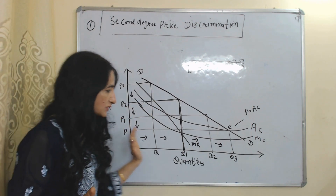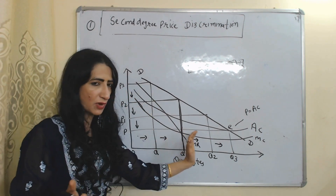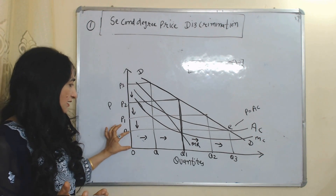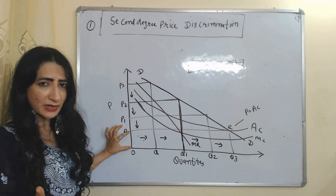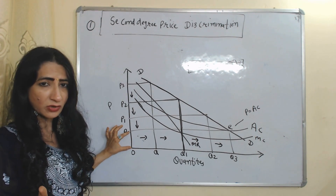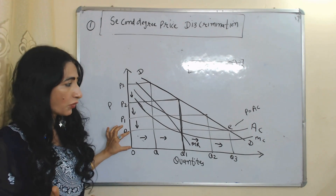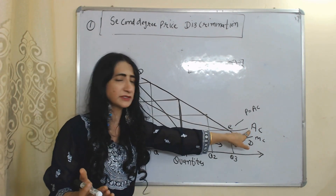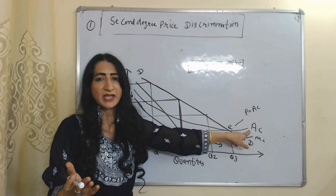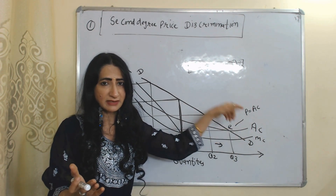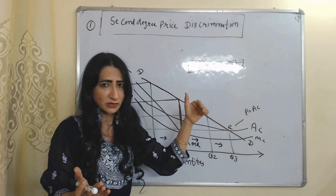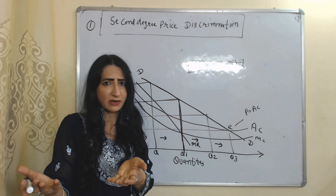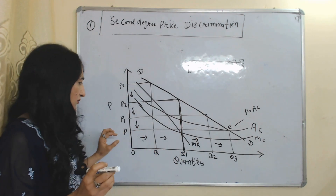That's why as we increase quantities, the price is reducing. But the seller cannot charge a price below OP, because OP price is equal to average cost. If the seller charges a price less than average cost, then obviously they will bear a loss.